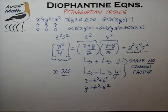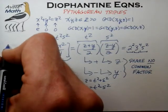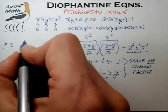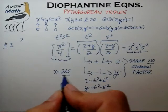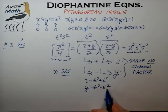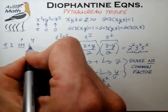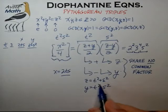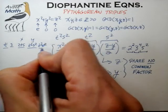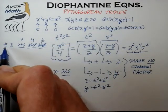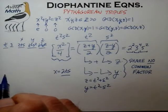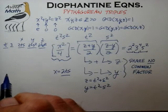Let's explore that and see what the table looks like if we examine what t and s give in terms of x = 2ts, y = t² − s², and z = t² + s². The conditions are that t and s must be relatively prime, and one must be even while the other is odd.